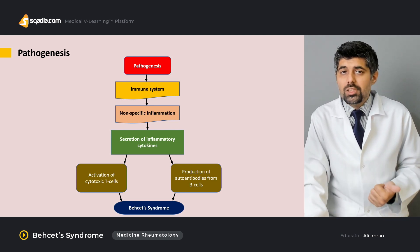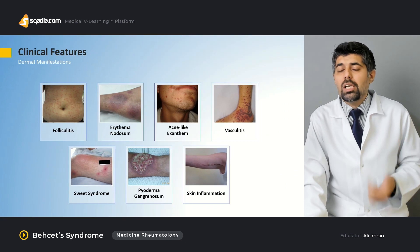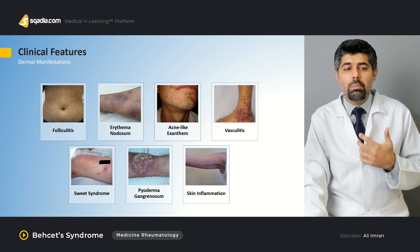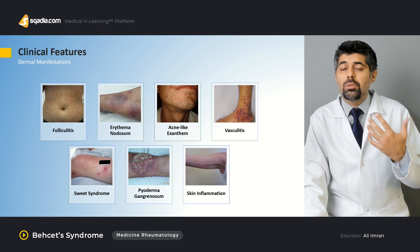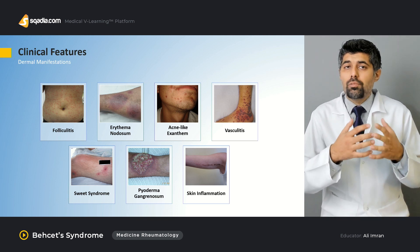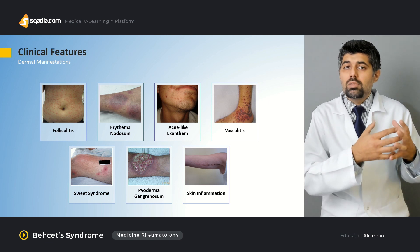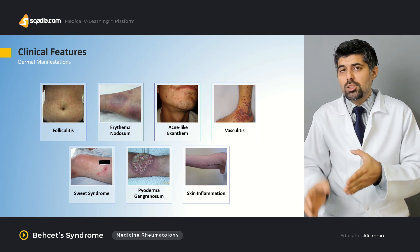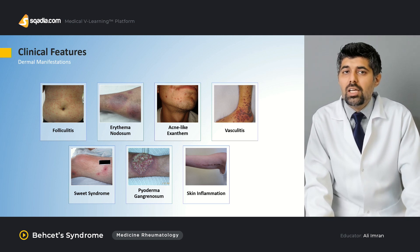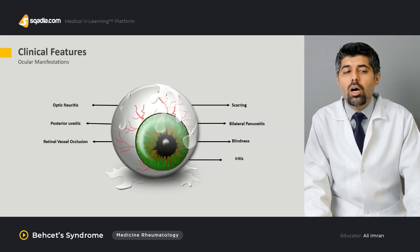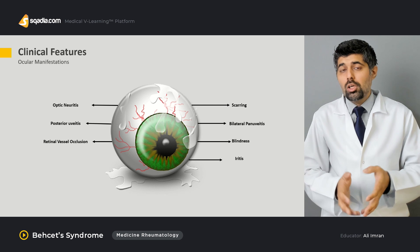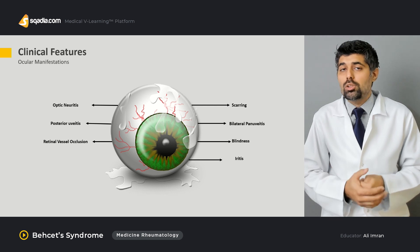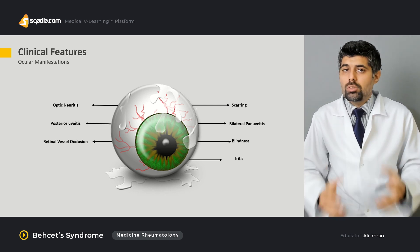We're going to learn all of this in this lecture along with various systemic manifestations. We're going to learn about the skin manifestations, how they present themselves, how different presentations affect different areas and how they differ in different patients. We're going to learn about all of these skin and cutaneous manifestations along with the ocular ones — which one is the most dire and can result in permanent loss of vision, and which ones are not that common.